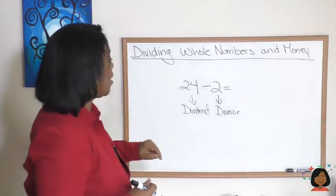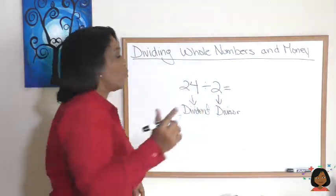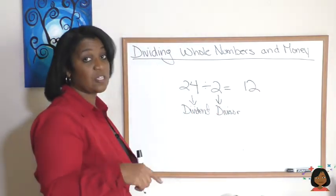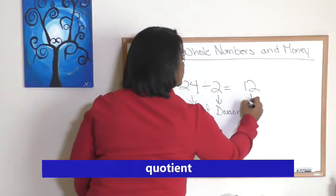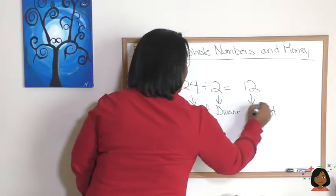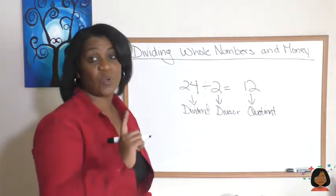Okay, let's keep it going. 24 divided by 2. We know the answer to that is 12, and 12 has a special name. It is called the quotient. Okay, dividend divisor quotient.